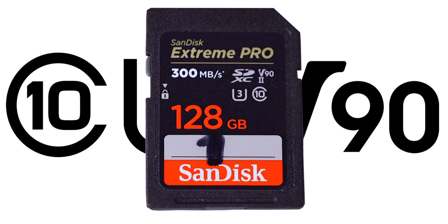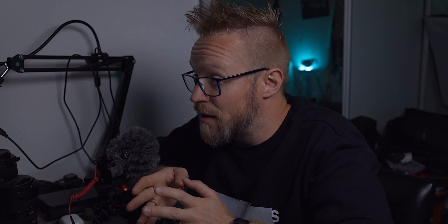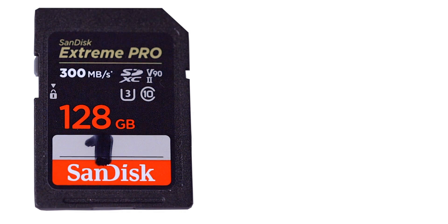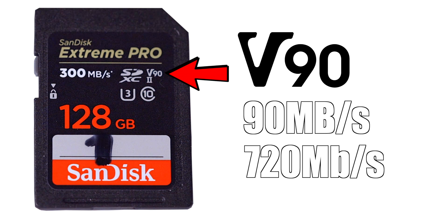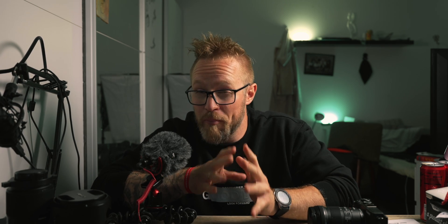If you're wondering what it means when a card says C10, U3, and V90 all at once — the answer is the highest number applies. So for that card, the minimum sustained write speed is 90MB per second, which is 720 megabits per second. The reason there are several speed classes on SD cards is that the SD Association kept adding new speed classes over time, and manufacturers include as many as they can to make it easier to find the right card. Personally, I think having all these speed classes just adds more confusion.